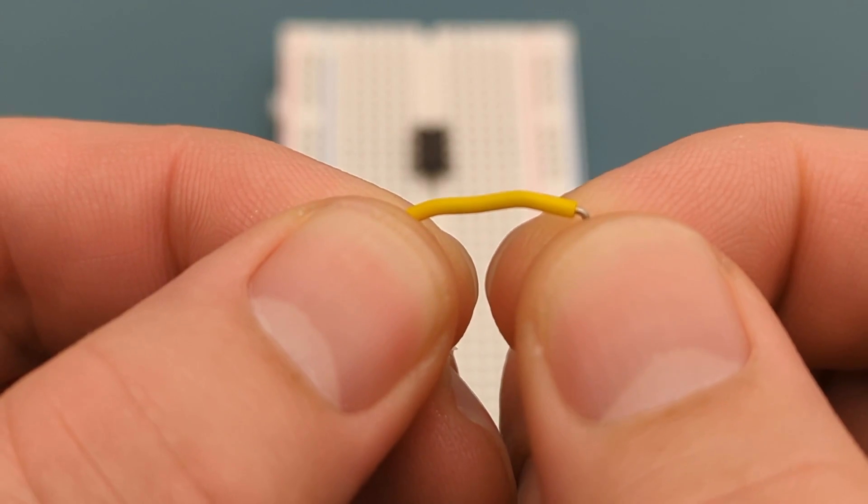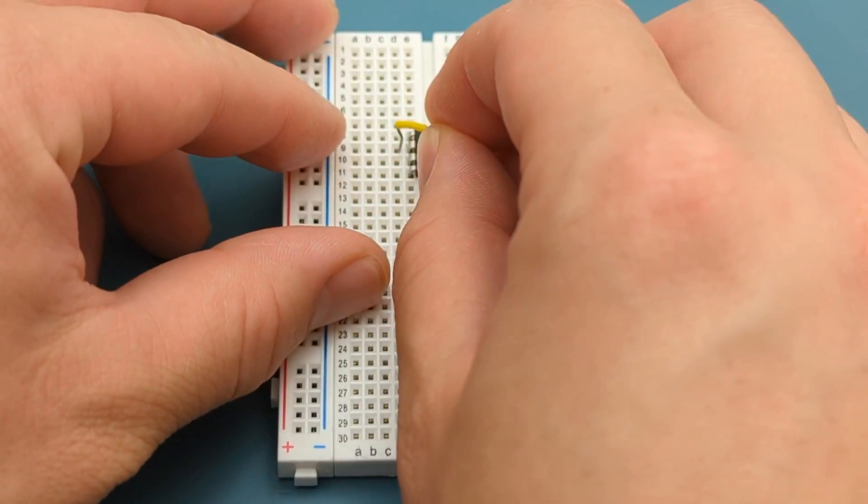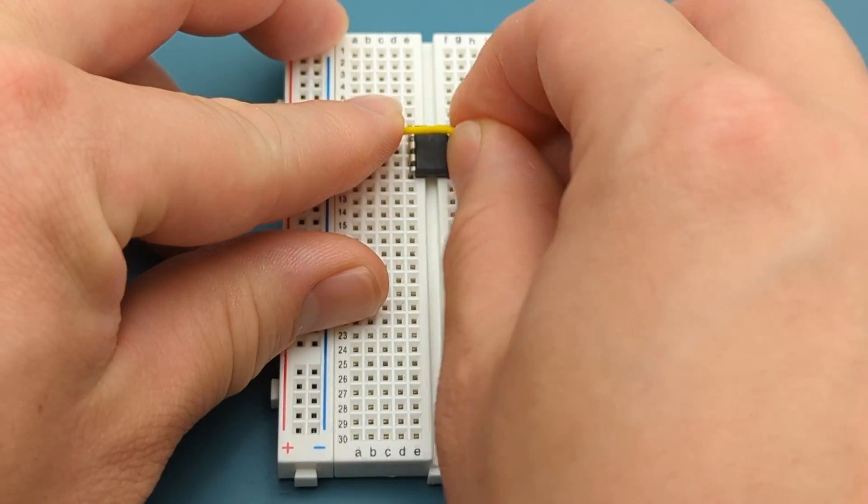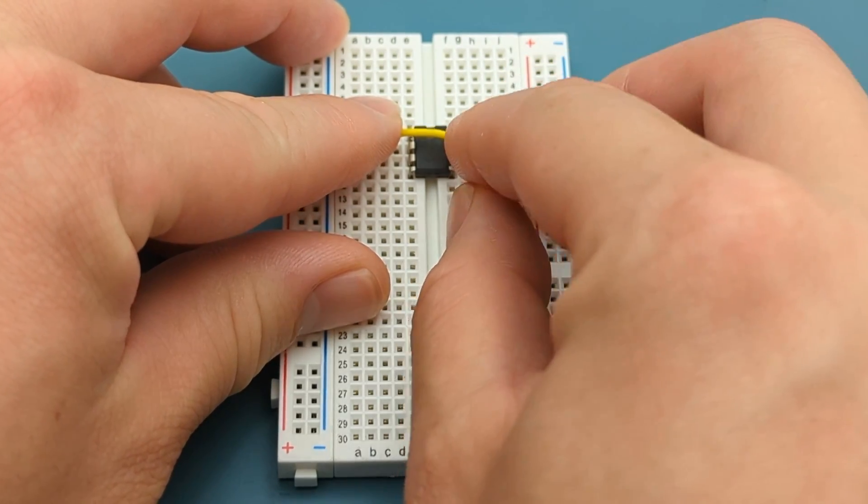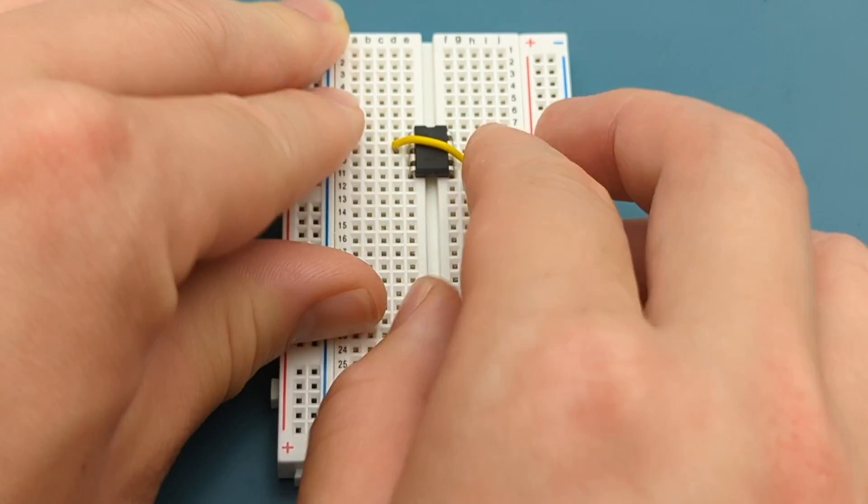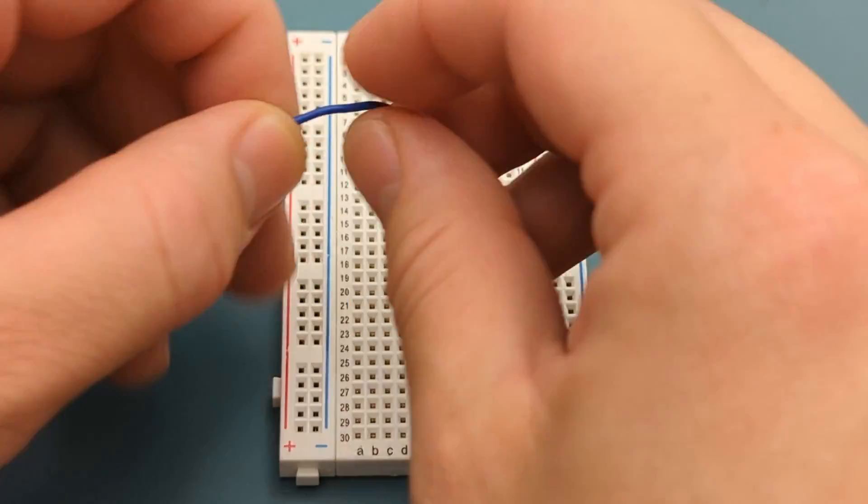Use a jumper wire to connect pin 2 or trigger to pin 6 or threshold. Use a jumper wire to connect pin 4 or reset to pin 8 or VCC.